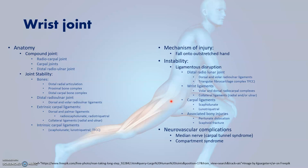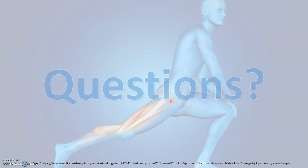Bony injuries can also cause instability, particularly fractures associated with perilunate dislocations — for example, perilunate dislocations associated with scaphoid fractures, fractures of the capitate, or fractures of the triquetrum. The most commonly affected nerve in these injuries is the median nerve, due to compression within the carpal tunnel. These injuries may also cause quite severe swelling and be associated with compartment syndrome as well.